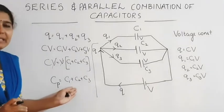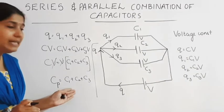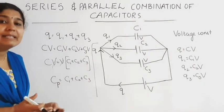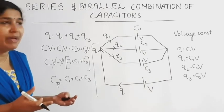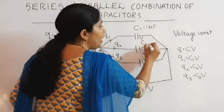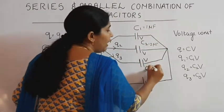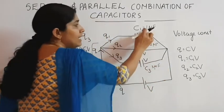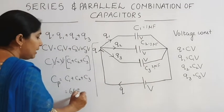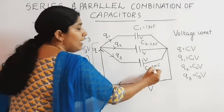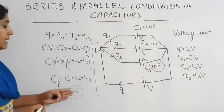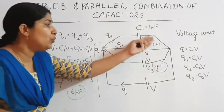The effective capacitance here is the addition of all the capacitors, so the effective capacitance is greater than the largest value. For example, if C1 is 1 microfarad, C2 is 2 microfarad, and C3 is 3 microfarad, the effective capacitance is 1 plus 2 plus 3 equals 6 microfarad — greater than the largest value of 3 microfarad.